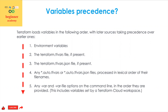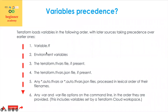For variable precedence, I strongly suggest keeping variables in only one or two places: variable.tf and a variable tfvars file. Whatever is written in variable.tf takes precedence if nothing else is set. If you have exported an environment variable, that will override what's in variable.tf. A terraform.tfvars file will override that, and a tfvars.json file overrides further. Passing a var-file via command line overrides all of the above, and if multiple are passed, the last one is picked.